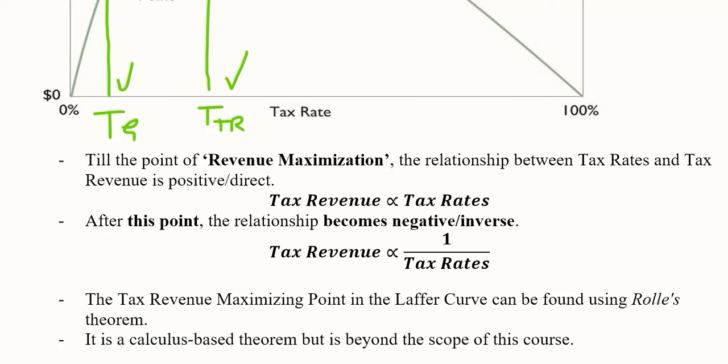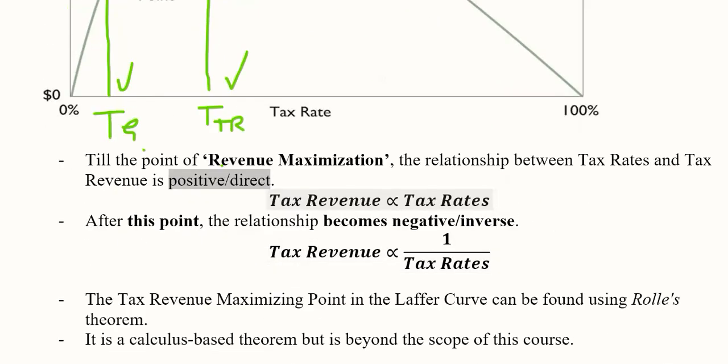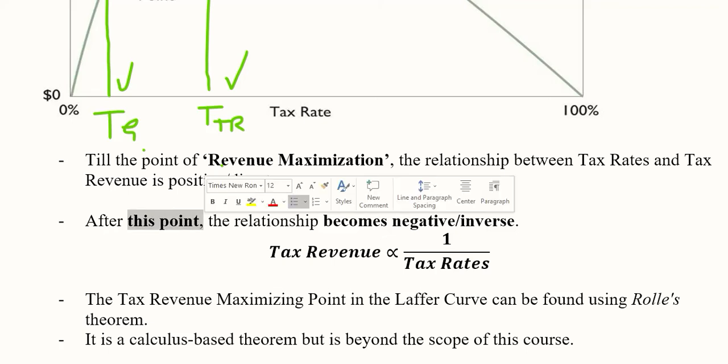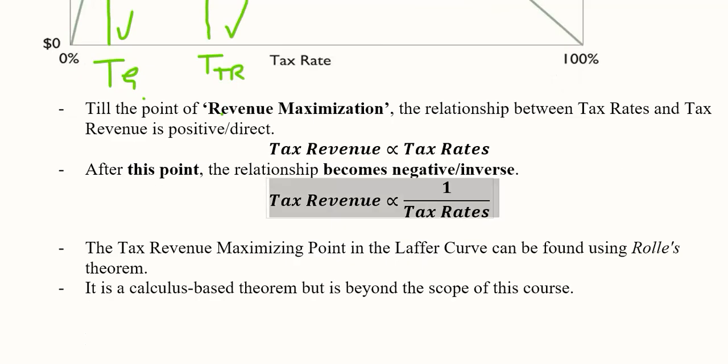Till the point of revenue maximization, we can see that the relationship is positive. Until that certain point, the relationship here is positive. But afterwards, the relationship becomes negative. Before it, the relationship or function shows there is a positive relationship between the two variables, but after this point the relationship becomes negative or inverse. Hence the tax revenue now is inversely related with the tax rates.